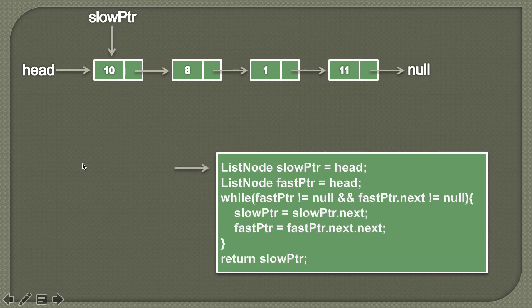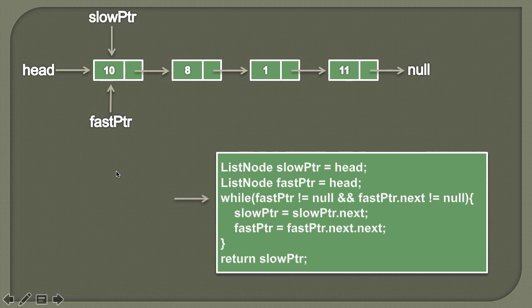Now we'll create another node, which is the fast pointer, and assign the value of head to it. The idea behind this algorithm is there is a slow pointer and a fast pointer. We'll traverse this list one by one — making the slow pointer traverse one node at a time, and the fast pointer two nodes at a time. So when the fast pointer reaches the end of the list, the slow pointer would be at the middle of the list.